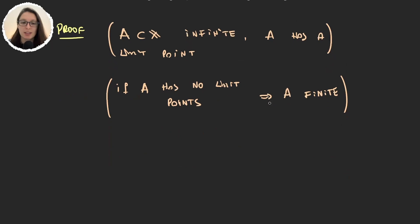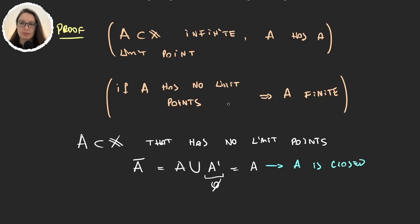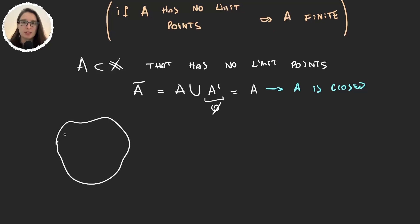So let's take a subset of X that has no limit points. Given that the closure of A is equal to A union its limit points, because this set is empty then we know that the closure is equal to A, and this tells us that A is closed. Also, because it has no limit points, points within our set cannot get accumulated, so our points are going to be distant from each other.